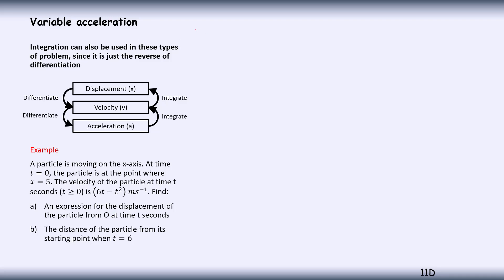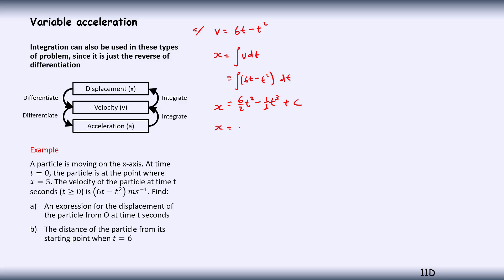Let's look at what we've got for part A. Velocity V is equal to 6t minus t squared. So displacement is going to be the integral of velocity with respect to t, which is equal to the integral of 6t minus t squared, in brackets, because with respect to t applies to both terms. We integrate term by term: add 1 to the power, so we get 6 over 2 t squared minus 1 third t cubed. And don't forget our constant.